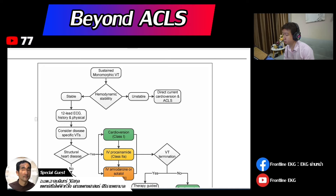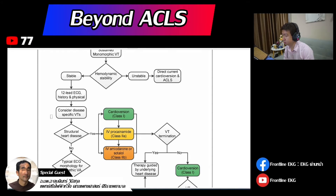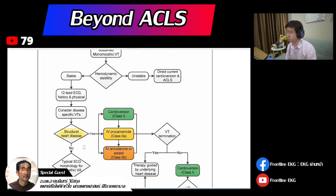For stable monomorphic VT, it can be associated with structural disease or not. Structural disease means the tachycardia involves a significant cardiac level — in many cases, the EF is poor but the rhythm itself may be stable. Looking at the tachycardia algorithm for stable VT, the Class 1 first choice recommendation is Electrical Cardioversion.